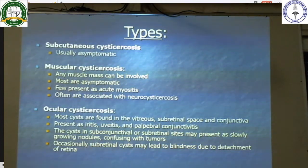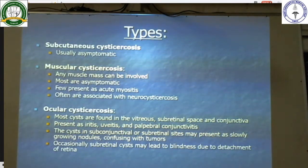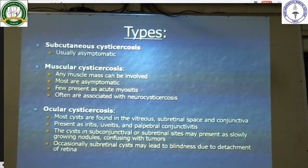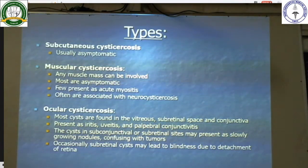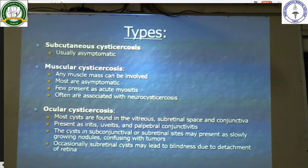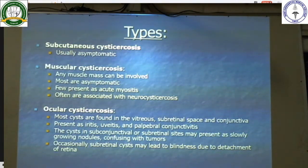Ocular cysticercosis: most cysts are found in the vitreous, subretinal space, and conjunctiva. It can present as iritis, uveitis, or palpable conjunctivitis. Cysts in subconjunctival or subretinal sites may present as slowly growing nodules, confusing with tumors. Occasionally, subretinal cysts may lead to blindness due to detachment of the retina.